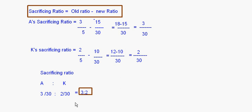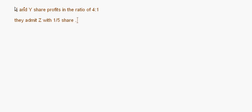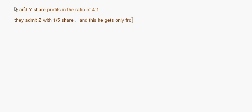In some questions, only one partner contributes to the new partner's share. For example: X and Y share profits in the ratio of 4:1. They admit Z with a 1/5 share, and Z's share comes only from X — Y is not contributing anything. Calculate the new ratio and sacrificing ratio.